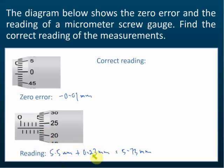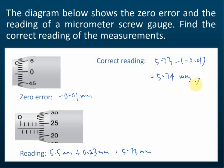This is not yet the correct reading because we must subtract the zero error: 5.73 minus (-0.01) equals 5.74 mm. To summarize: close the micrometer, identify the zero error, take your reading, then subtract the zero error to get the correct reading.